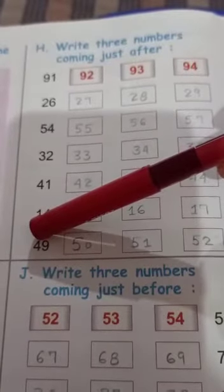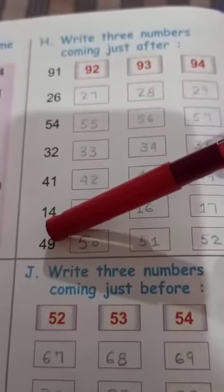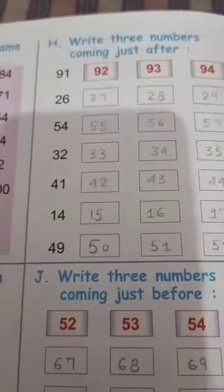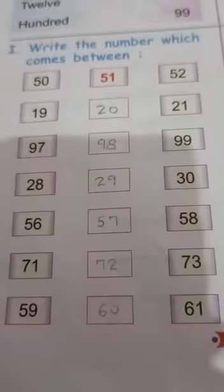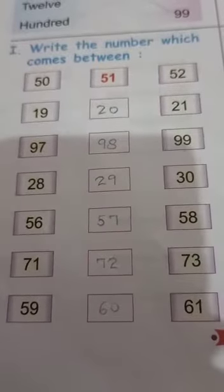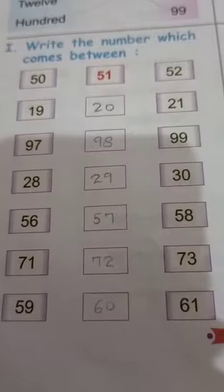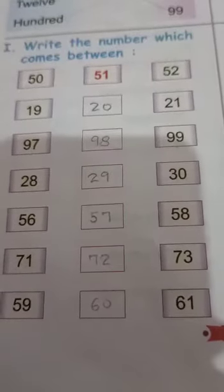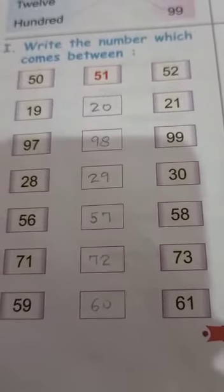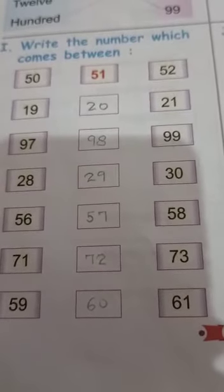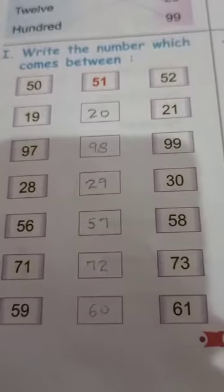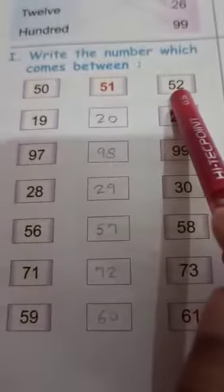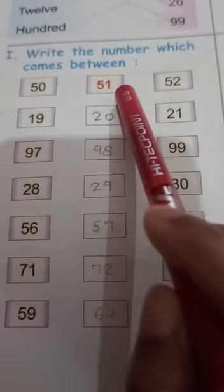Just like that 49, forward counting of 49 is 50, 51 and 52. Ok children, for this exercise, we have to write the numbers coming in between the given two numbers, which means we have to write that number which comes just after the first one and before the last given number. Ok.